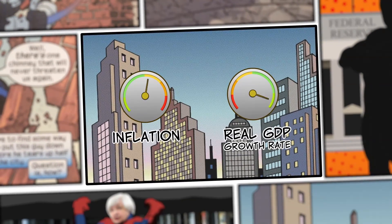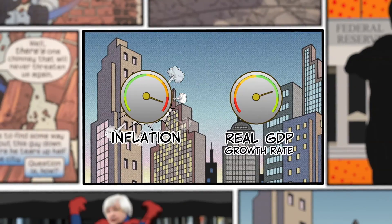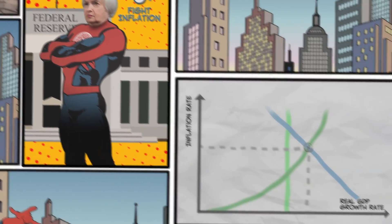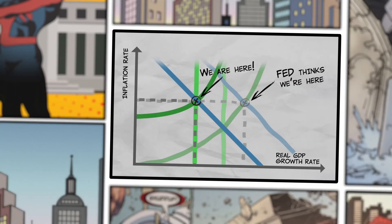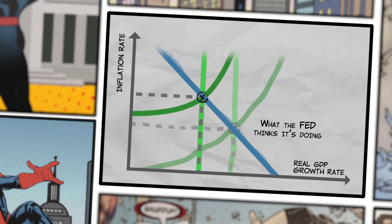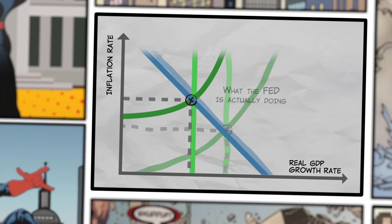And remember, economic data isn't always easy to understand in real time. It sometimes happens, for example, that the higher inflation rate is seen in the data before the growth rate starts to decline. So the Fed might start to cut back on the money supply before realizing that the economy is heading towards a recession, moving the economy in the wrong direction before learning what the actual state of the economy is.